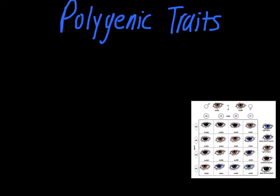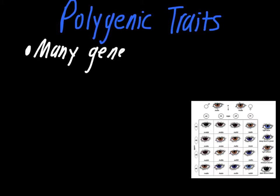Now we get to polygenic traits. If we break the word down, 'polygenic' means many genes. The reason this is important is that you cannot do a Punnett square for problems like this.